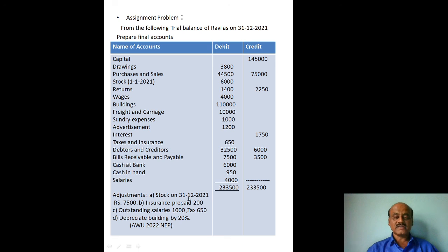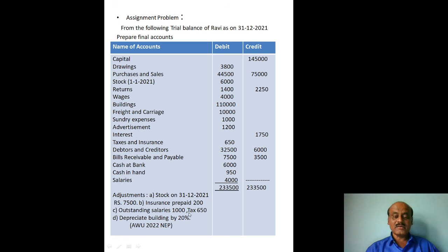Adjustments for the second problem: Closing stock on 31st December Rs. 7,500 — goes to trading account credit side and balance sheet asset side. Insurance prepaid — goes to profit and loss account. Outstanding salary — add to salary on debit side of P&L; outstanding amount shown on liability side of balance sheet. Depreciate building by 20%: 20% of Rs. 1,10,000 equals Rs. 22,000 depreciation on building.